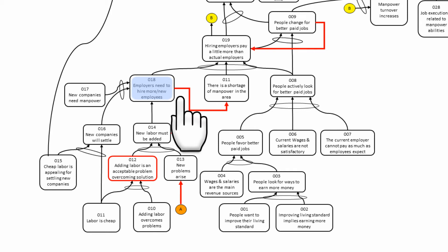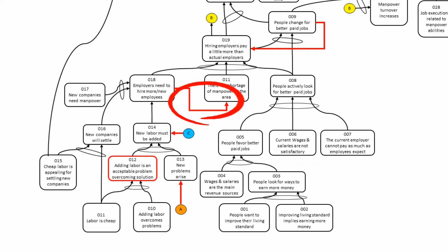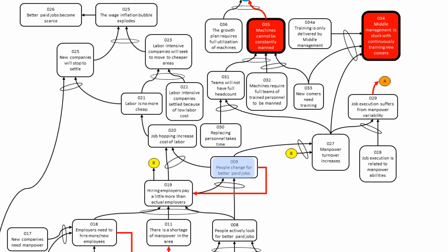When you need more employees and there is already a shortage of manpower in the area, there is a reinforcing loop — in this case a negative reinforcing loop — because you will make the problem even worse. If we don't have enough manpower in the area and we keep asking for more, we will drain even more of the available workforce. So it will increase the problem of shortage of manpower in the area.